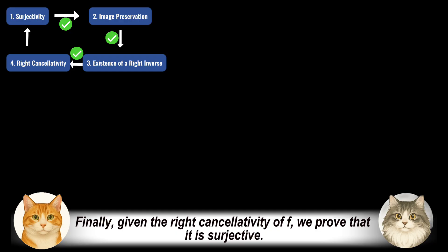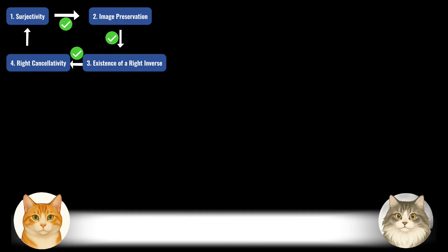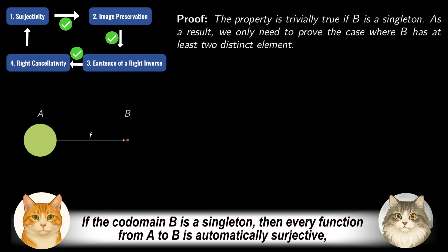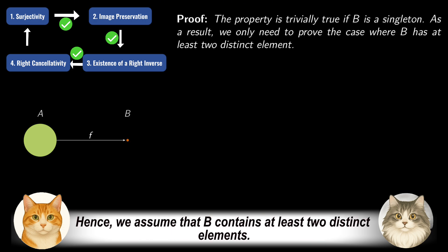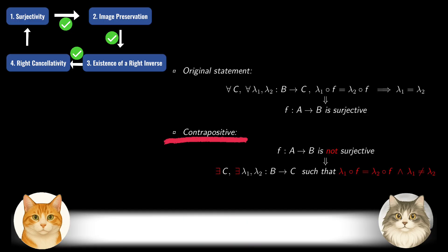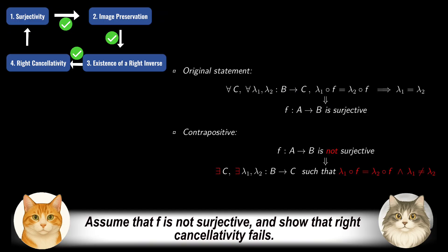Finally, given the right cancellativity of f, we prove that it is surjective. First, observe a trivial case: if the codomain B is a singleton, then every function from A to B is automatically surjective and there is nothing to prove. Hence, we assume that B contains at least two distinct elements. To prove the desired implication, we proceed by contrapositive: assume that f is not surjective, and show that right cancellativity fails.